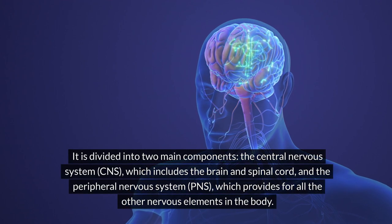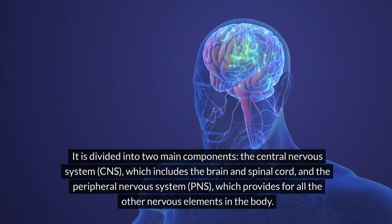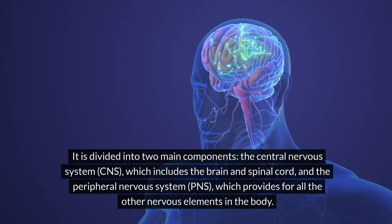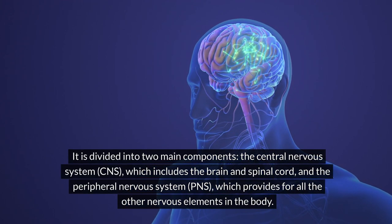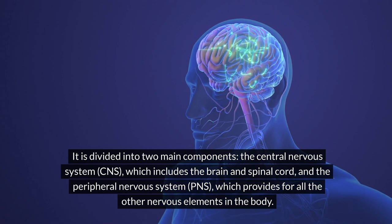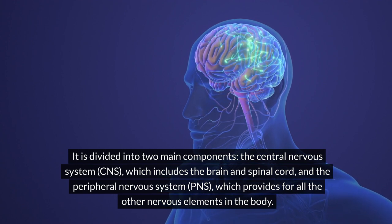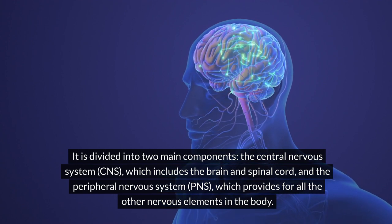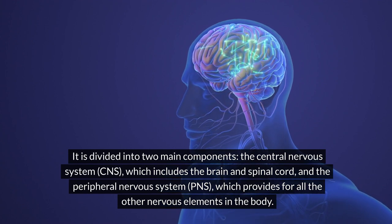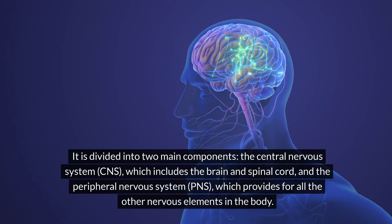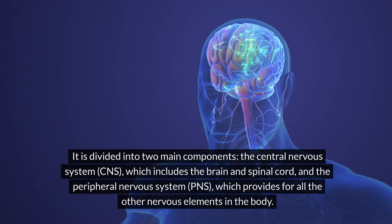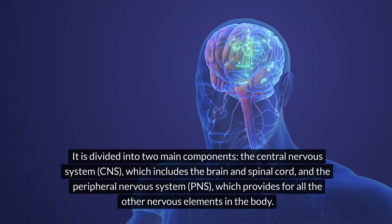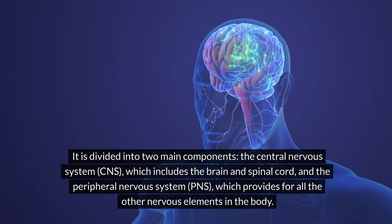It is divided into two main components: the central nervous system (CNS), which includes the brain and spinal cord, and the peripheral nervous system (PNS), which provides for all the other nervous elements in the body.